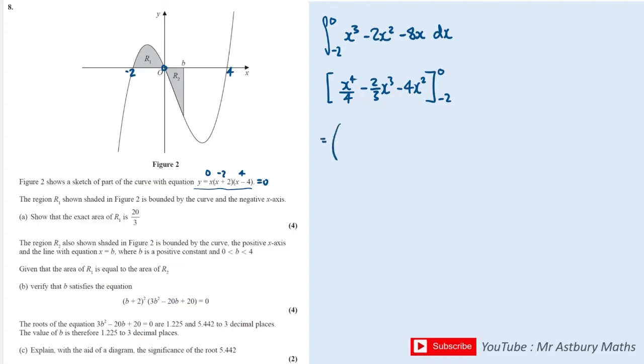When we sub in 0, all of these terms have an x in, so that's just going to give us 0. Then we take away the second bracket and sub in minus 2. So minus 2 to the power of 4 is 16. Minus 2 to the power of 3 is minus 8. There's a minus there so that turns it to positive 8.